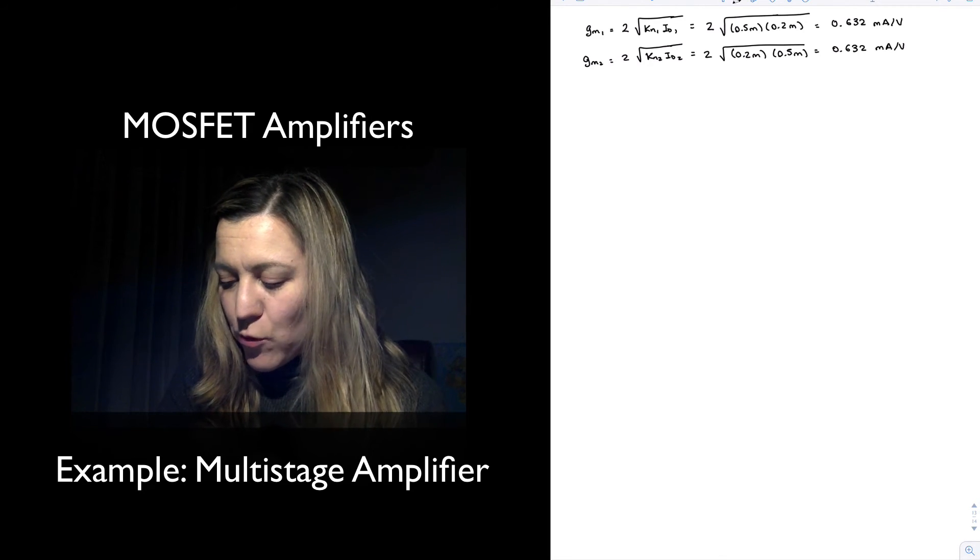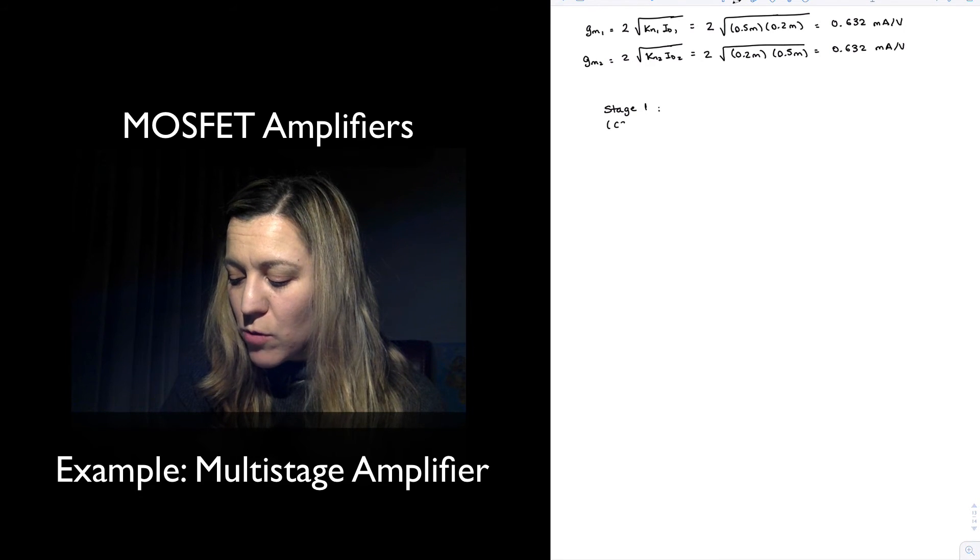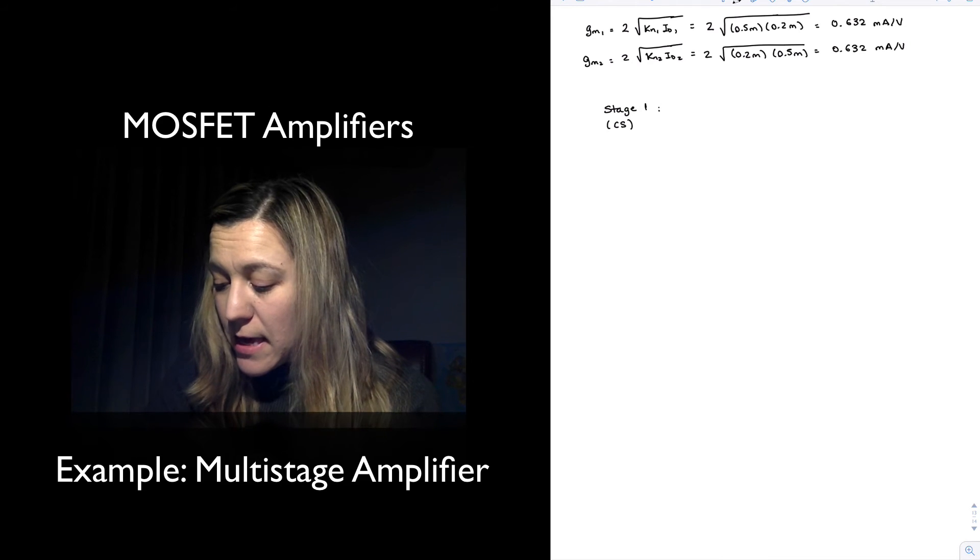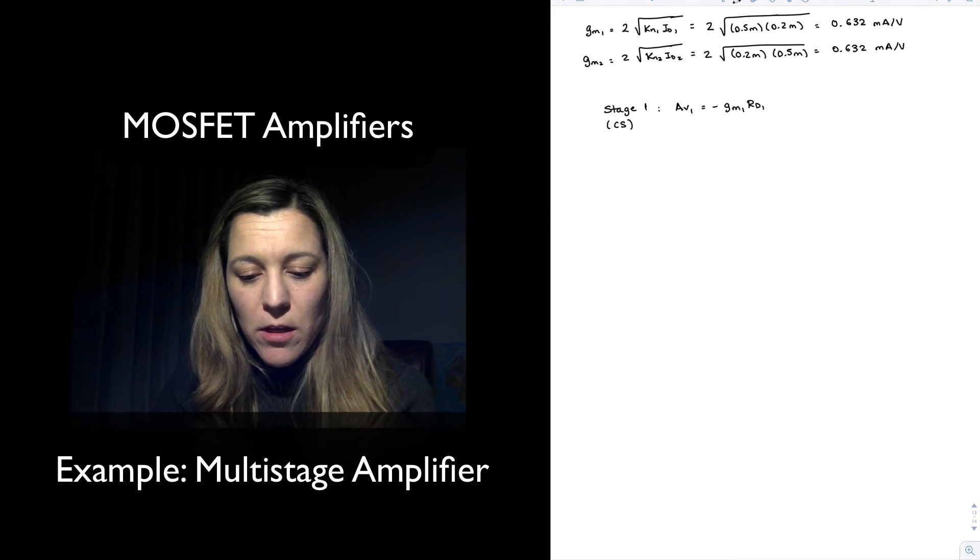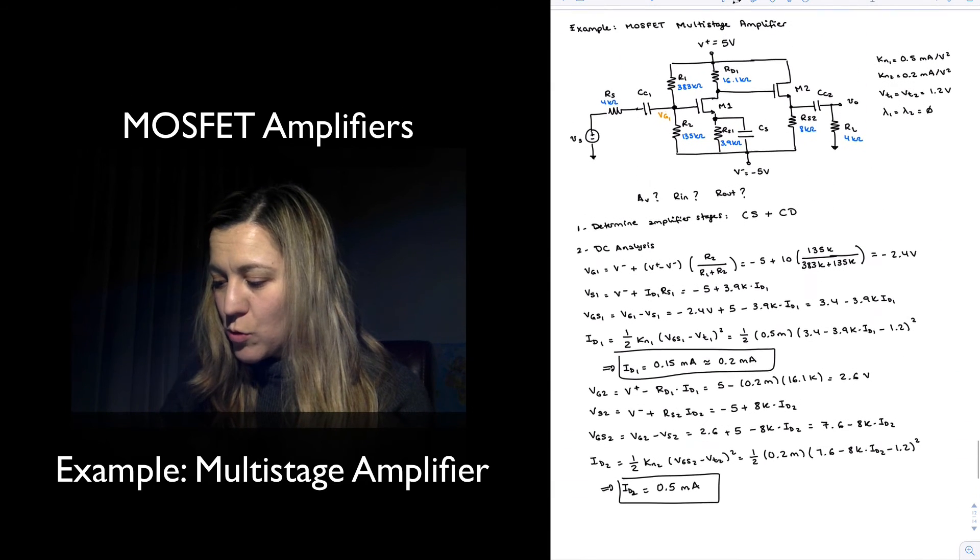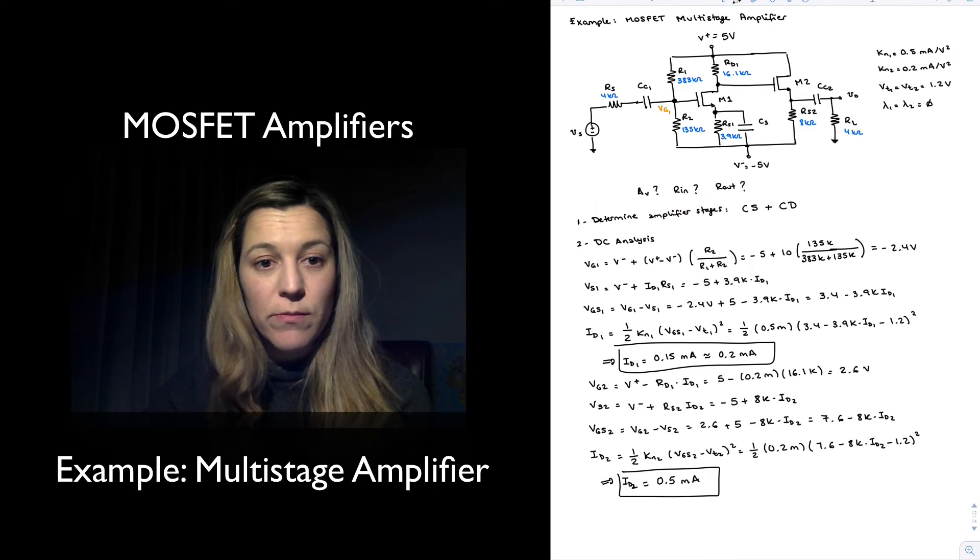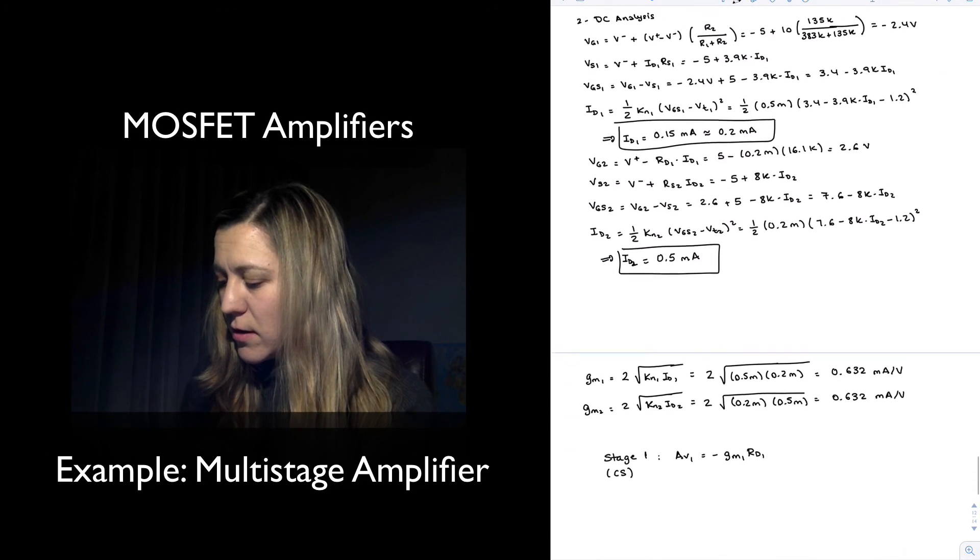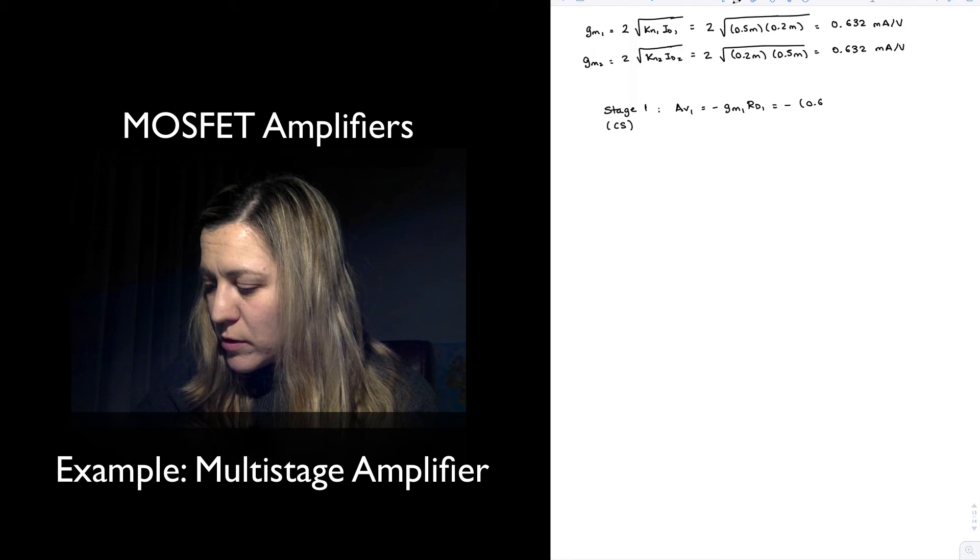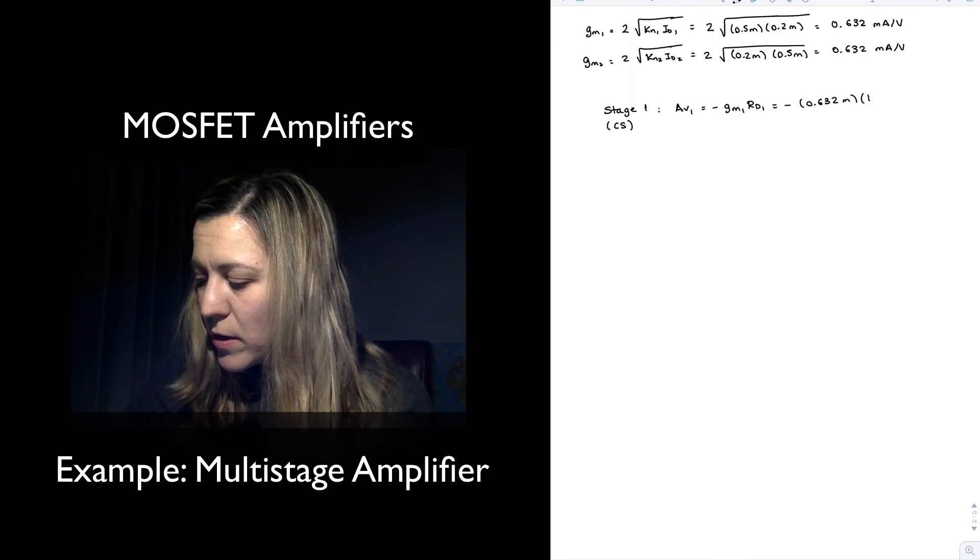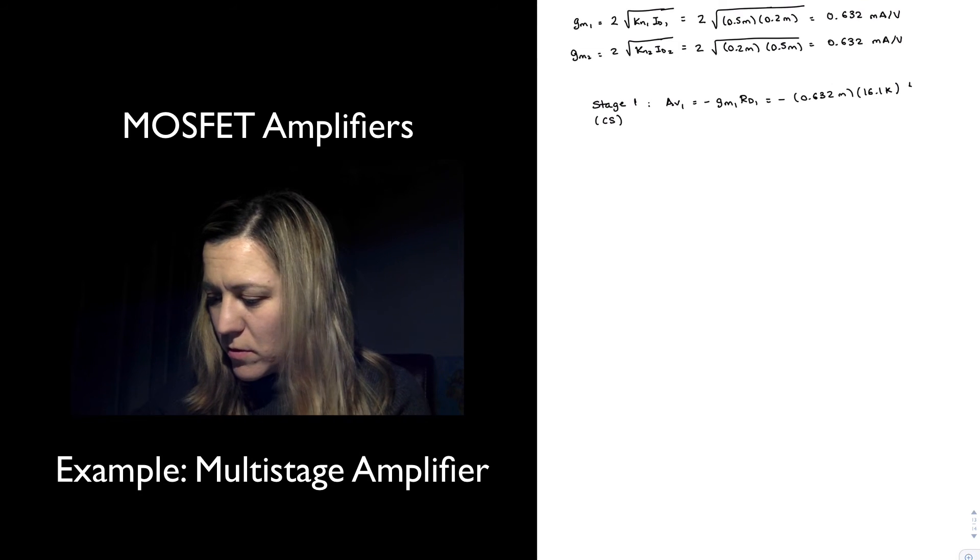Now I am ready to calculate the gain, input resistance, and output resistance. Since this is a two-stage amplifier I can do that separately for stage 1, which we said was a common source amplifier. The gain for stage 1, AV1, is equal to minus gm1 times RD1. Notice that the source resistance was fully bypassed by capacitor CS, so there's no resistance connected to the source for purposes of calculating the AC gain. This is going to be equal to minus 0.632 milliamps times RD1, which is 16.1k, which is essentially equal to minus 10.17.